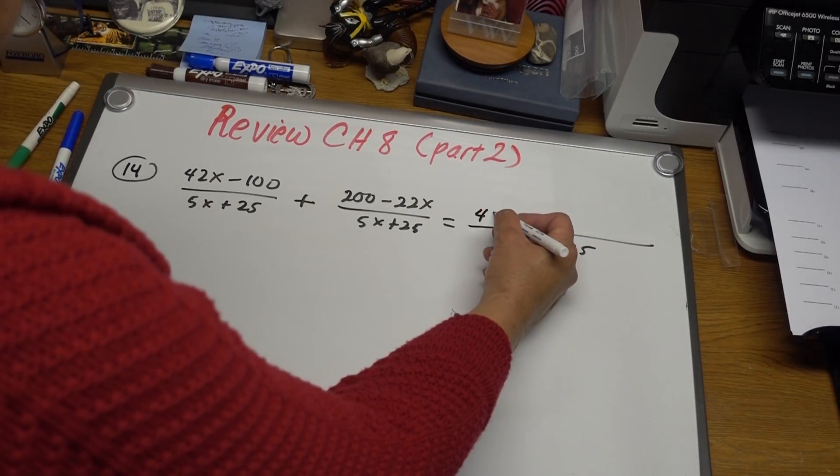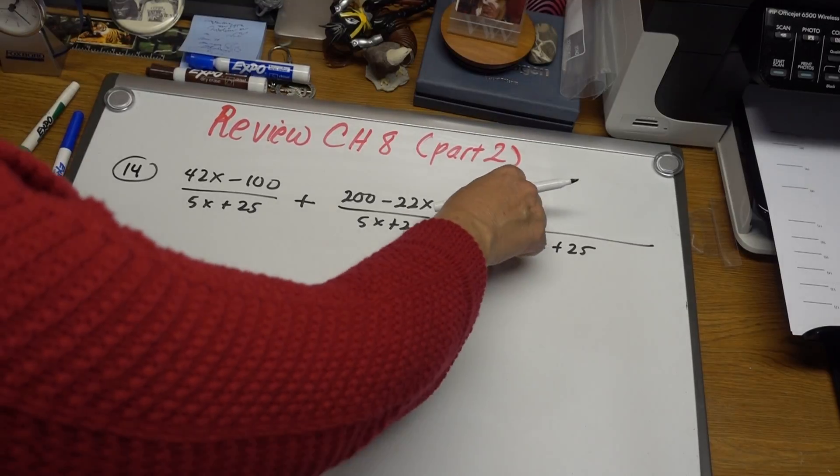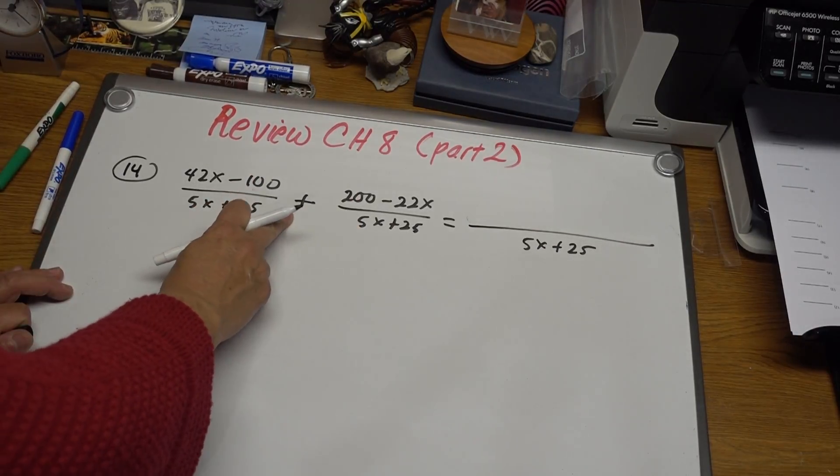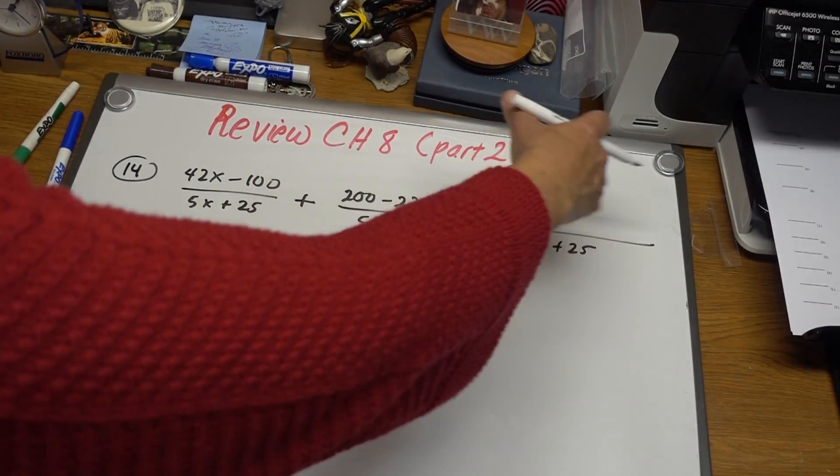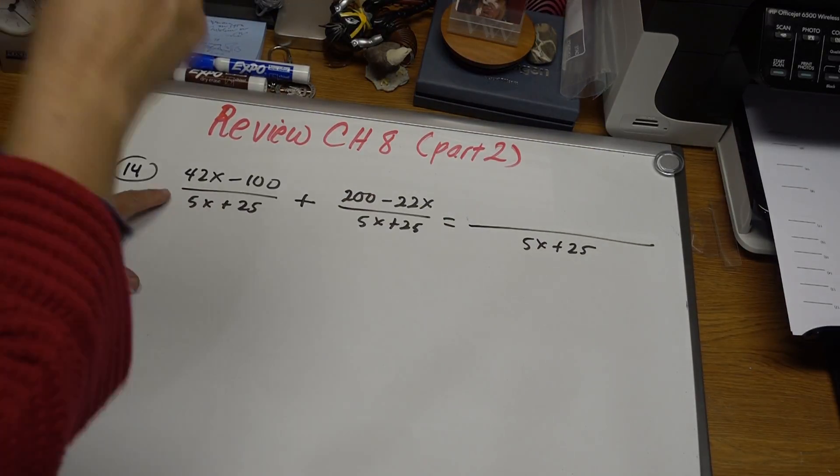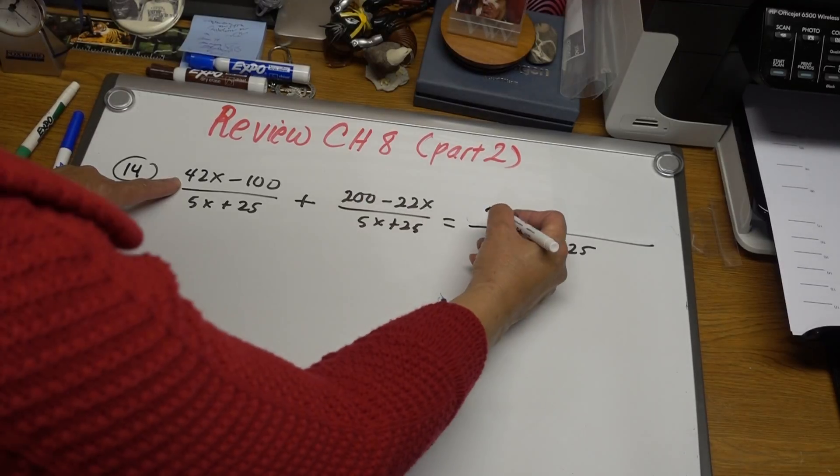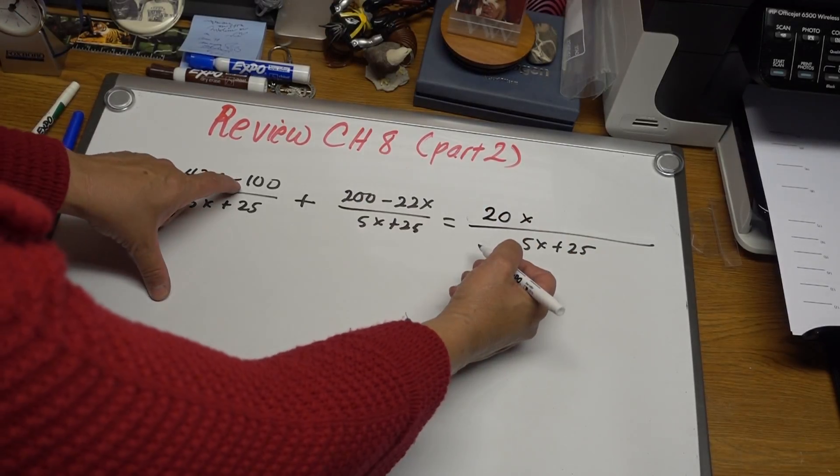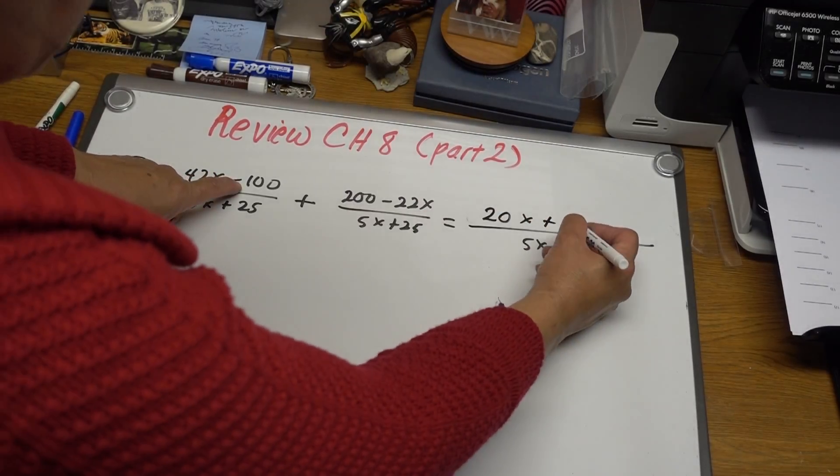Since this is plus, we don't have to be careful with putting the whole thing again here. We can add it from here. So we have 42x minus 22x is 20x. Negative 100 plus 200 is plus 100.